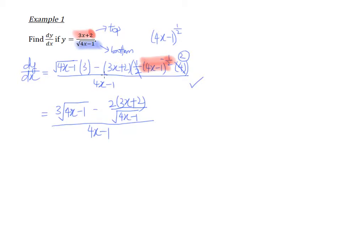Using the quotient rule is not difficult — keep the bottom, differentiate the top, minus away, keep the top, differentiate the bottom over the bottom squared. But the trouble most students face is not using the quotient rule as it is — it's usually the aftermath: you need to simplify to get the final answer. That's the problem most students tend to have. So let's take a look at how we resolve this.